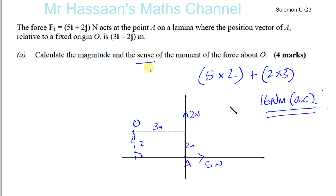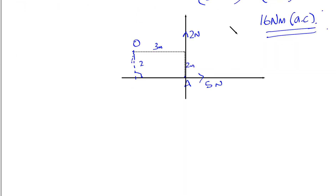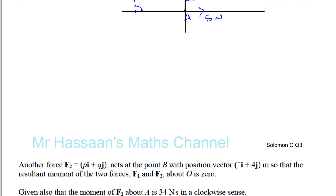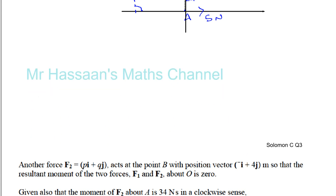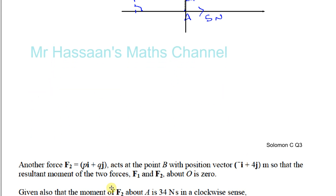So that's the magnitude and the sense — anticlockwise — of the moment of force F1 about O. Splitting into horizontal and vertical components really helps in this type of question. Now Part B: another force F2, which is pi + qj...